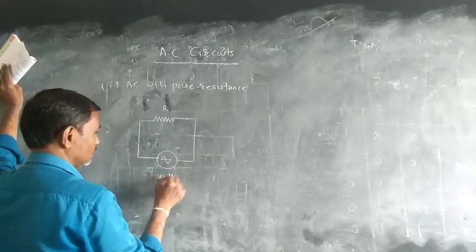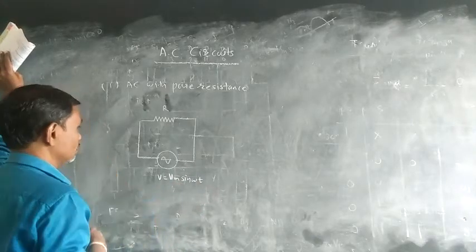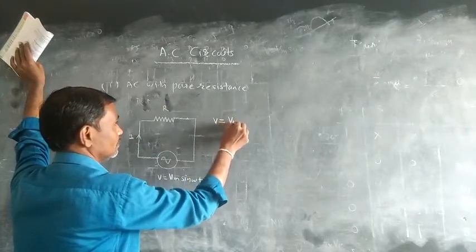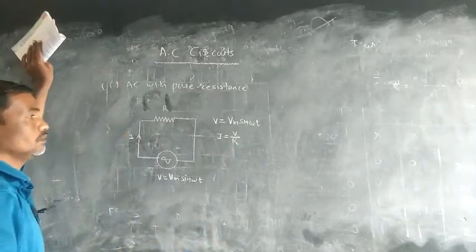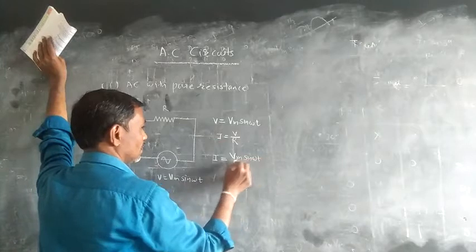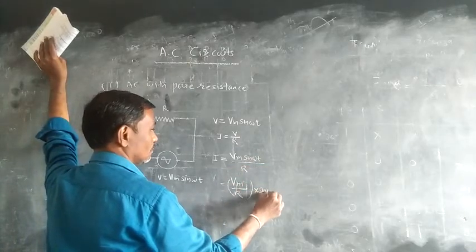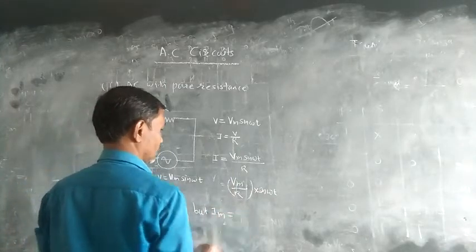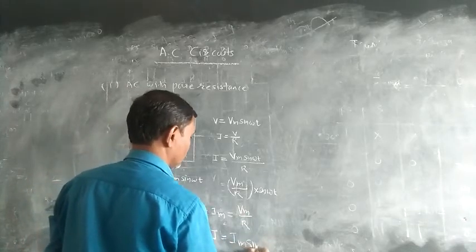Suppose the AC voltage is V equals to Vm sine of omega t. Let I be the current flowing through this circuit. The voltage equals to Vm sine of omega t. By Ohm's law, current equals to voltage divided by resistance. So current equals to Vm sine of omega t divided by R, which gives Im sine of omega t, where Im equals Vm divided by R, the peak value of the alternating current.